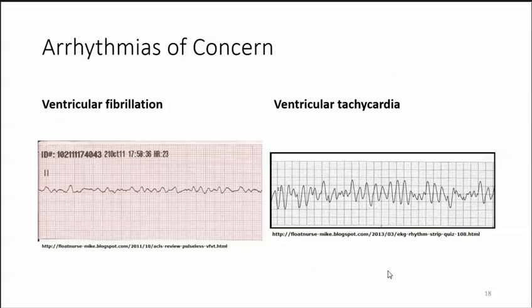Ventricular fibrillation is a disorganized, chaotic, non-perfusing, and lethal arrhythmia. Patients often experience dizziness, feelings of impending doom, chest discomfort, and shortness of breath immediately before or at the time of arrest. Ventricular tachycardia is an organized ventricular rhythm that often results in a precipitous drop in blood pressure and level of consciousness. V-tach may continue to produce a pulse but often deteriorates to a pulseless rhythm or ventricular fibrillation, and it has the same symptoms as V-fib.